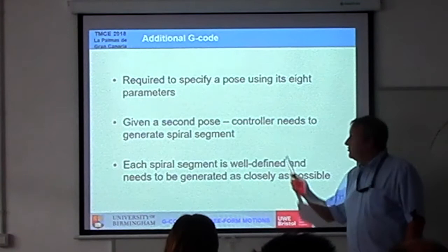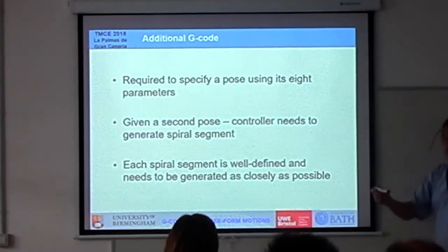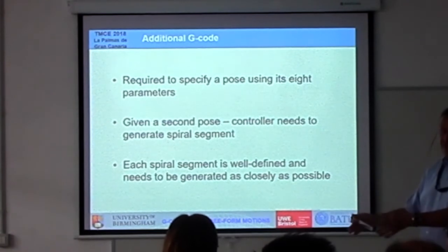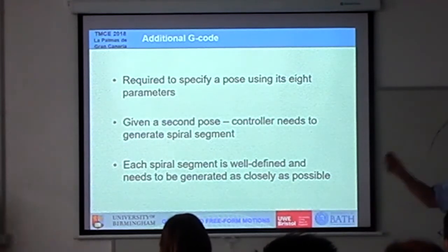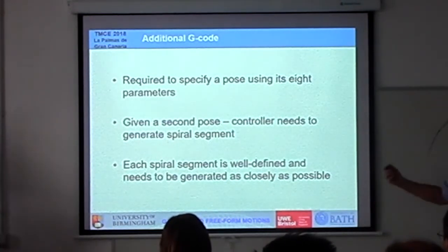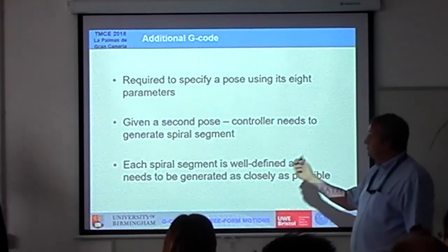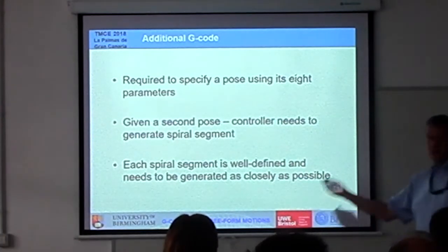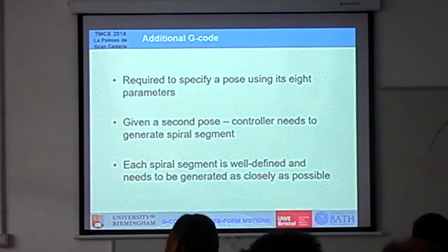For the CAM manufacturer, what they're going to have to do is add more data at the start. We're going to have a minimum six, but preferably eight. So eight more variables in the G-codes, for the start pose, for the finish pose.